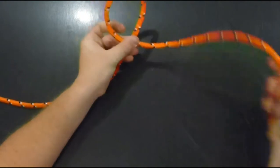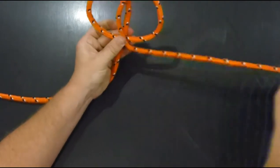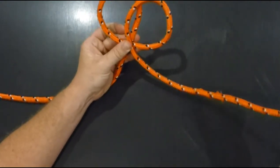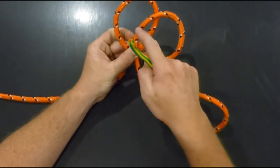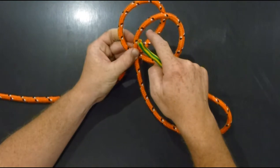One loop, two loops. Then you take this, and you want to go over the first, under the second, over the third, and under the last one.